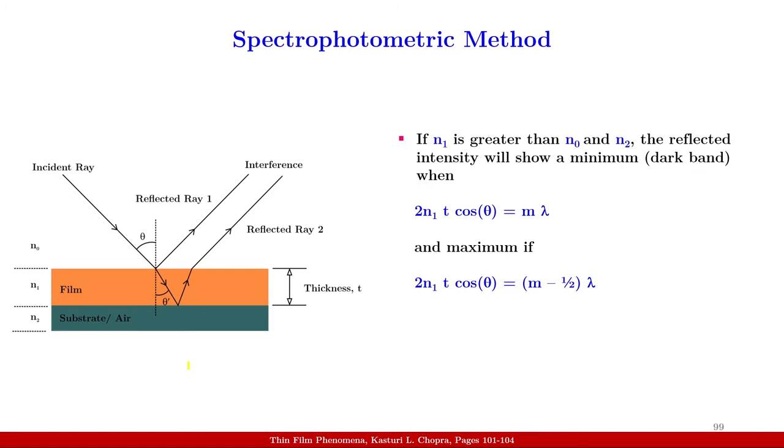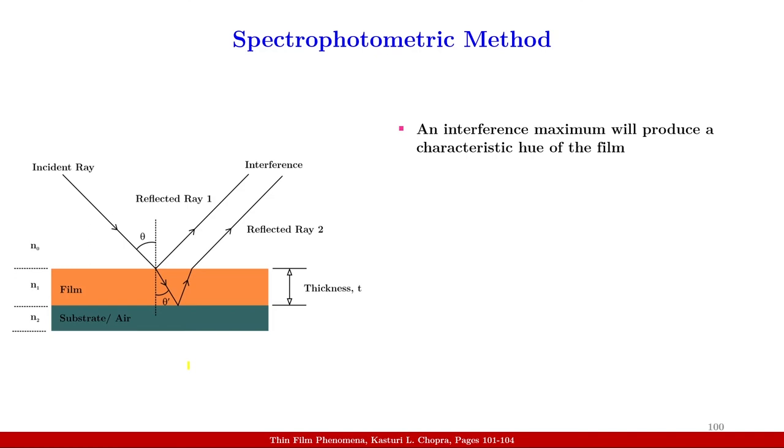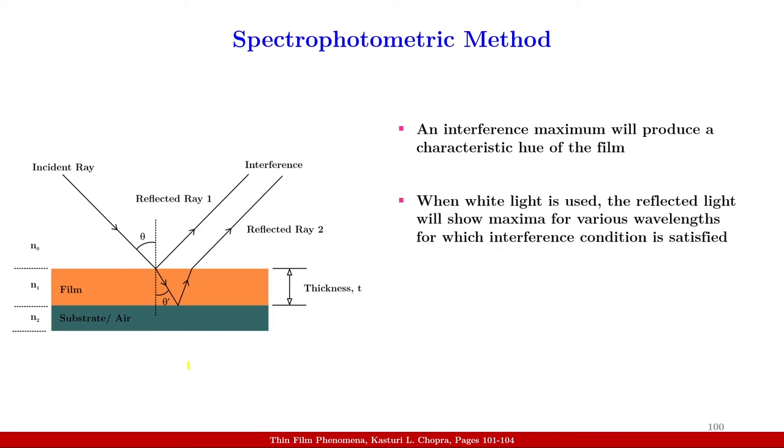If N1 is greater than N0 and N2, the reflected intensity will show a minimum that is a dark band when 2N1t cos theta equal to M lambda and maximum if 2N1t cos theta equal to M minus half lambda. An interference maximum will produce a characteristic hue of the film. When white light is used, the reflected light will show maxima for various wavelengths for which interference condition is satisfied. And this is the basis of the visual method of monitoring film thickness and this was realized by Newton as early as 1675.